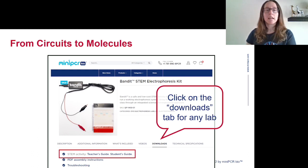You can find this activity online as a free download. If you go to the Bandit page on the MiniPCR store and click the downloads tab, you'll see the teacher's guide and student's guide for this activity available as PDF downloads.